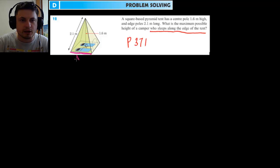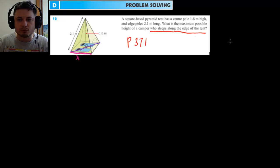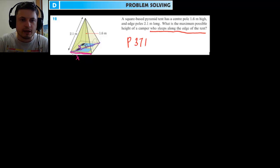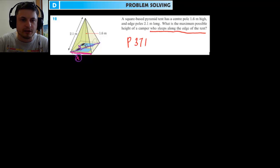We need to find this length x. The pole is in the middle of a different plane, so we can't use just one calculation. For three-dimensional Pythagoras problems we need to use the theorem twice — in two different planes. First, plane A where we find value y, and then plane B where we find value x.